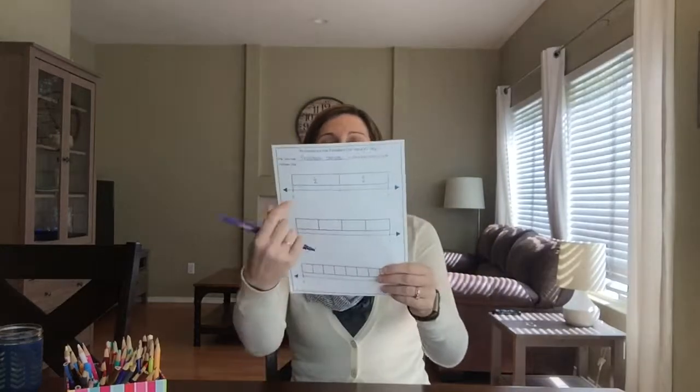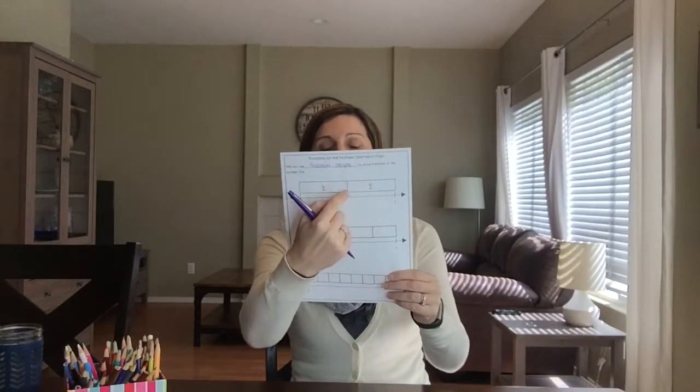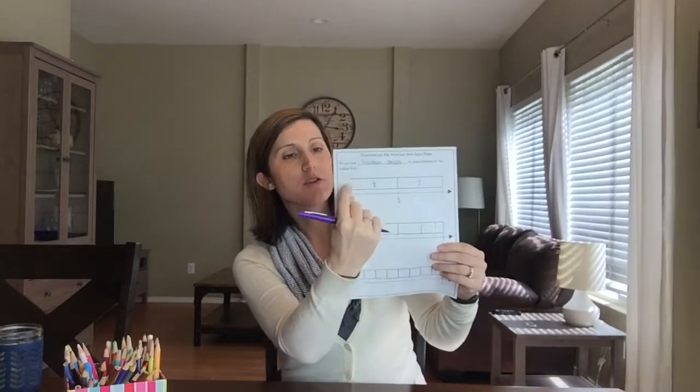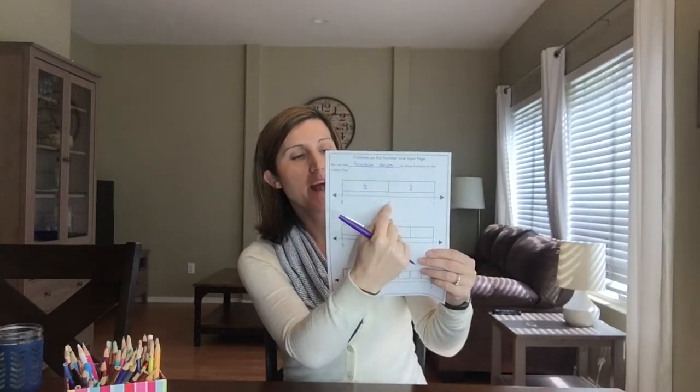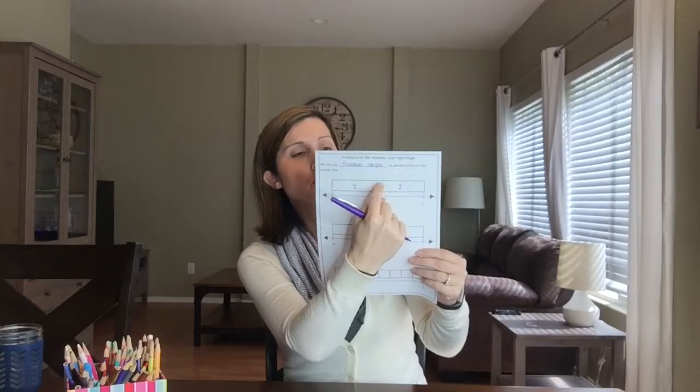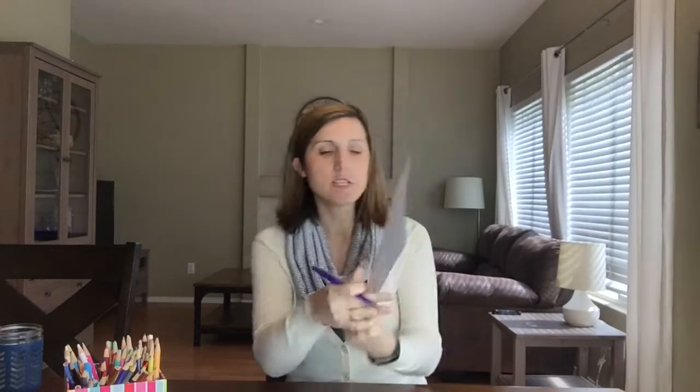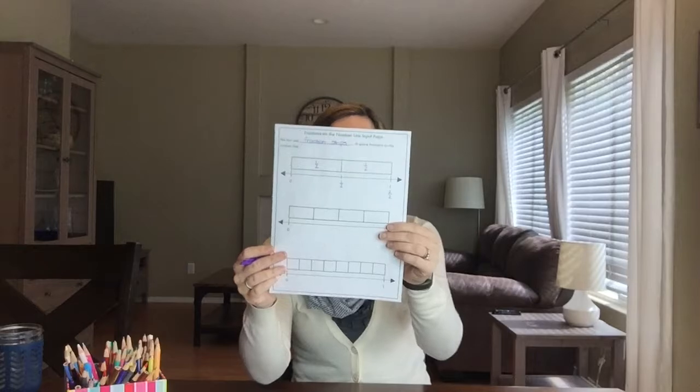I'm going to make a line on my number line where the pieces of the fraction strips are. Now I can label my line. One half has passed right here, so one half — I've got one half right there. If I move over again, now I have two halves. One half, two halves. And I can label my one as two halves.